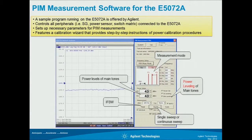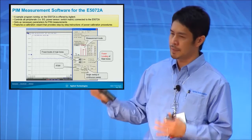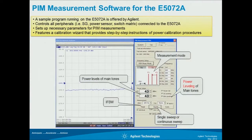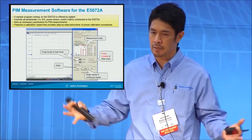Agilent has developed measurement software for PIM measurement and also S-parameter measurement. This is a program that users can download from our website, and you can use it for free. This software controls all peripheral instruments like the signal generator or power meters. It supports several measurement modes, you can change the power, adjust the IF bandwidth to change noise and speed, and it supports all calibration steps to calibrate the full configuration.